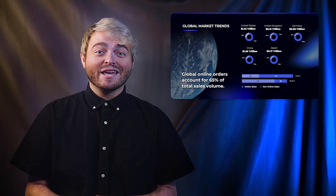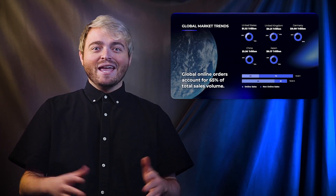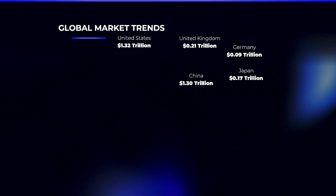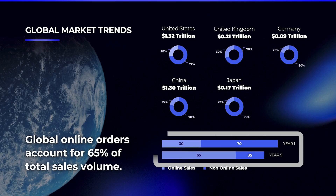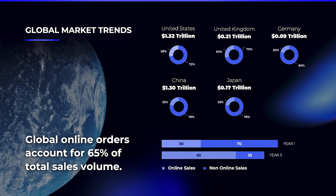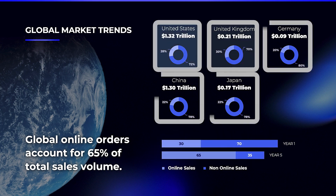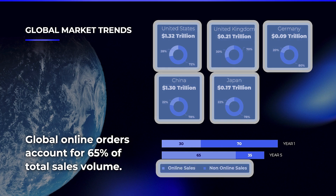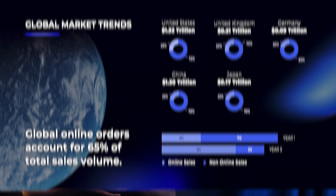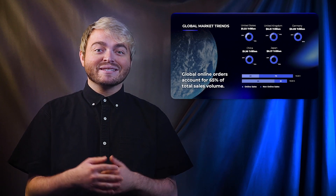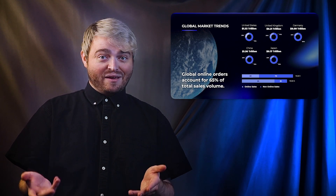Now let's break this information down into finer points. In this hypothetical scenario, we're analyzing how sales channels have evolved over a period of time. The regional data highlighted in the previous slide are now divided into online and non-online sales.